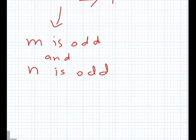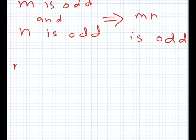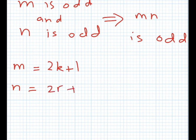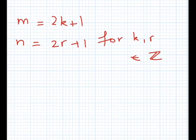And P bar is that m times n is not even, or odd. Now we are going to prove this way. Let's say m is equal to 2k plus 1 and n is equal to 2r plus 1 for k and r some integers.